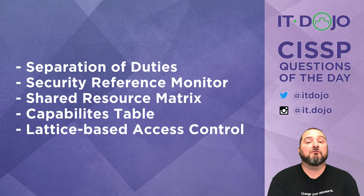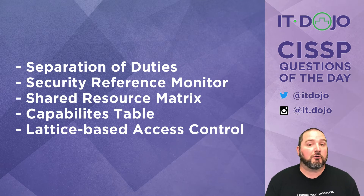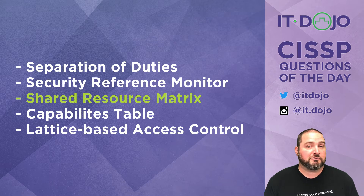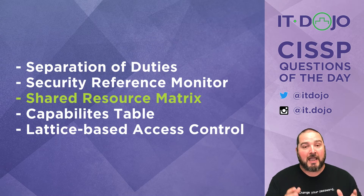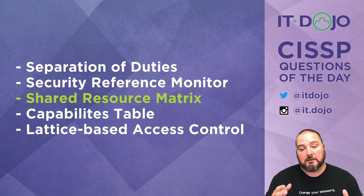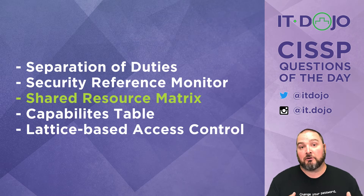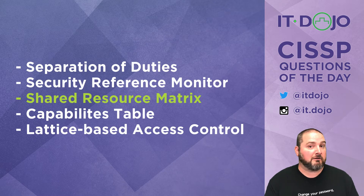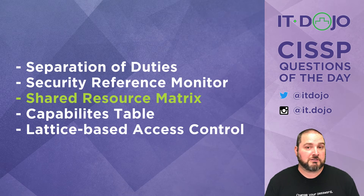The answer choice we are looking for — in terms of how you identify the opportunity or potential for a covert storage channel — is by using something called a shared resource matrix. A shared resource matrix is a way of looking at the attributes of particular objects and defining whether or not that attribute has the capability for somebody to read it or modify it, then correlating that with the different levels of users on the system. Basically, if somebody has the ability to modify it and somebody of a lesser security level has the ability to read it, the opportunity is there for a covert storage channel to exist.